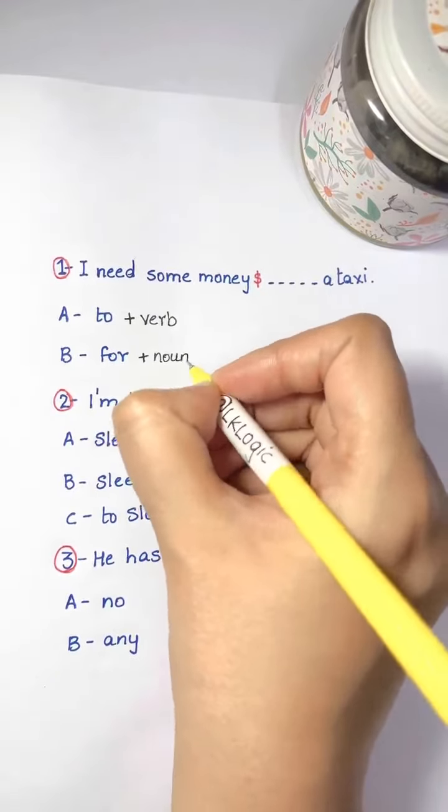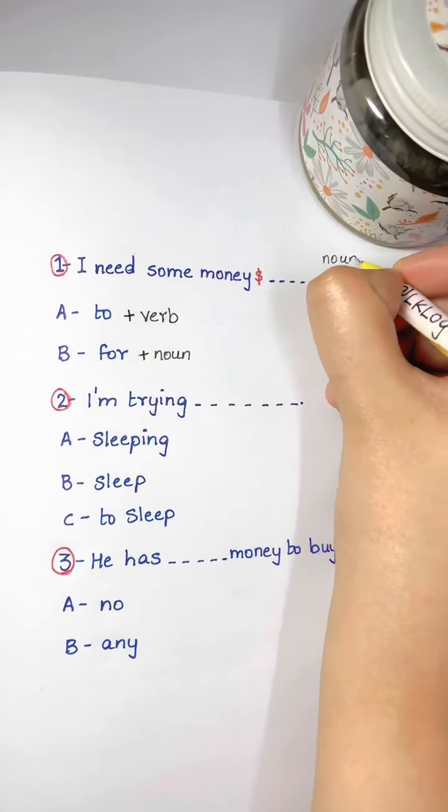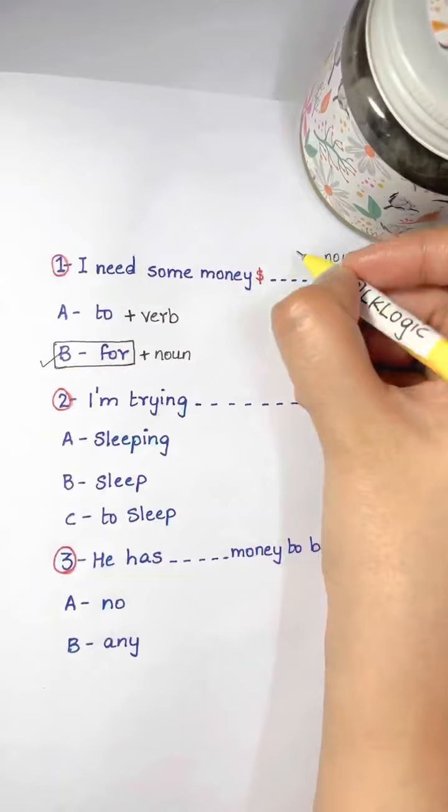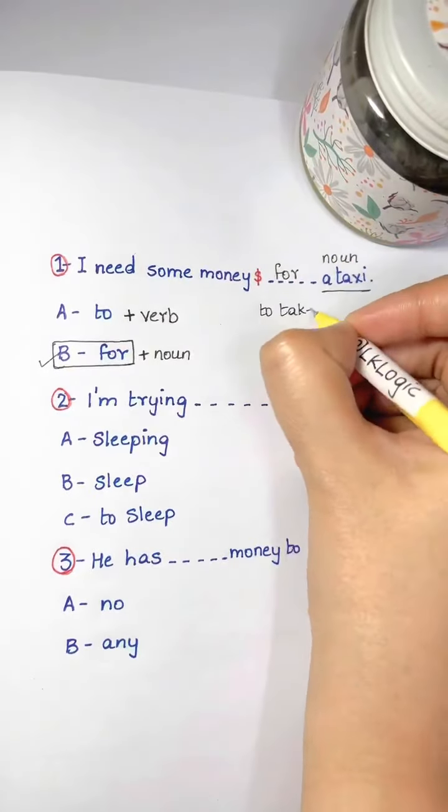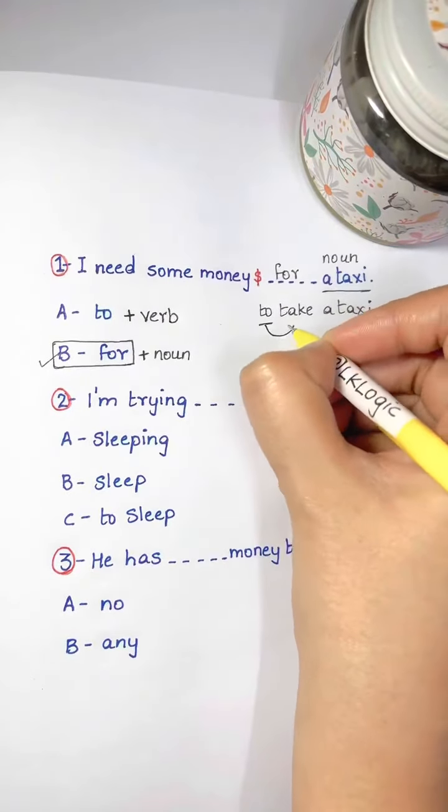For could be followed by a noun or -ing. A taxi is a noun, so the answer is for. I need some money for a taxi, not to a taxi. You could say to take a taxi because to needs a verb like take.